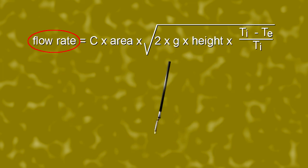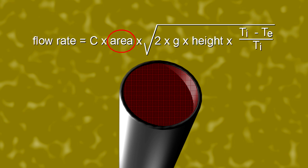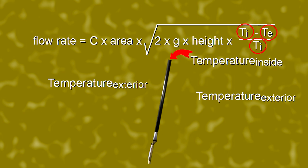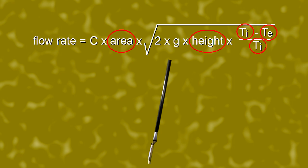It calculates the flow rate, the amount of air coming out of the chimney each second. It uses things like the cross sectional area of the chimney, the height of the chimney, and the temperatures inside and outside the chimney. These were all things I could experiment with in my solar tower.